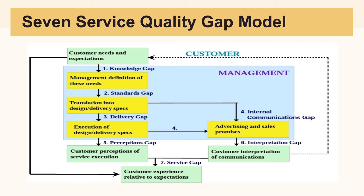The design and delivery specification transitions to both the advertising and sales promises and the customer's expectation of service execution. This transitions to the final stage in the model — the customer's experience relative to expectation. The advertising and sales promises also transition to the customer's interpretation of communication.